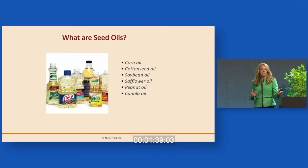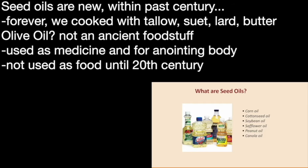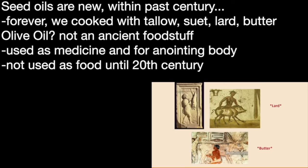They're all relatively new. The history of our cooking fats was not seed oils. We cooked with tallow that came from cattle, suet which is from ruminant animals that comes around the organs, lard which comes from pigs, and butter. These were the main cooking fats — really the only cooking fats — in the Western world.